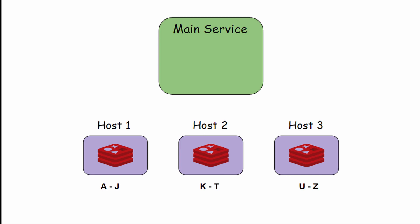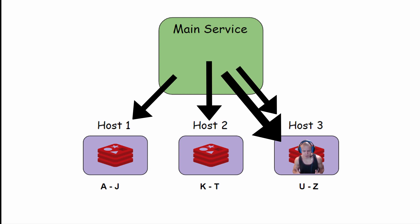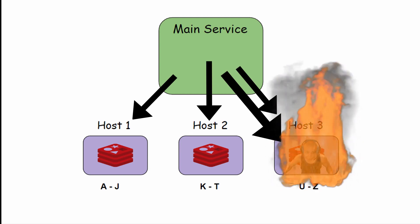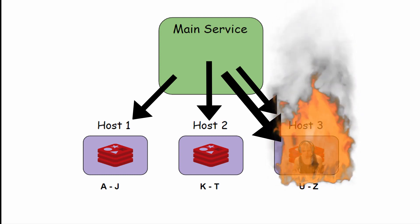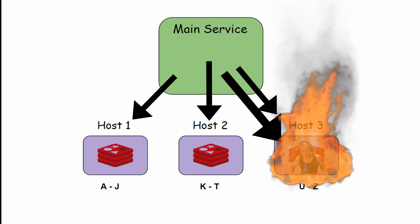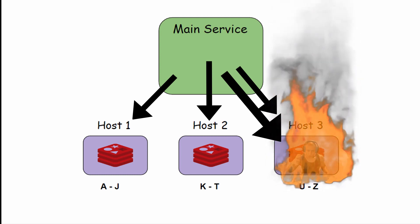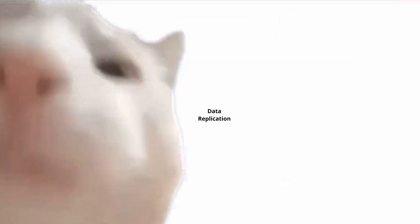But the service we currently have is still lacking high availability. What happens if one of the shards gets a much higher amount of traffic than other shards? This is known as the hot shard problem. Data replication is the answer.